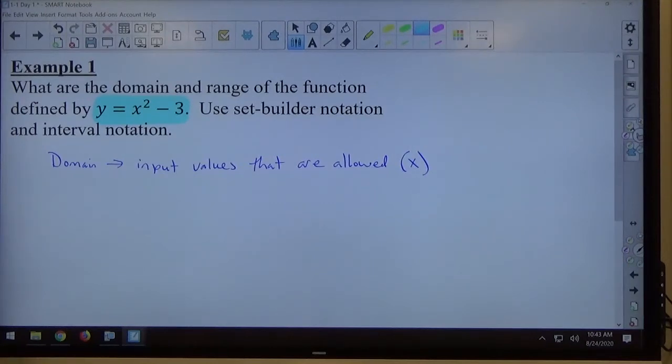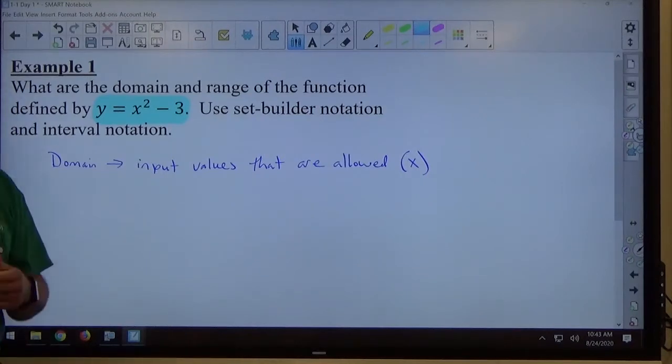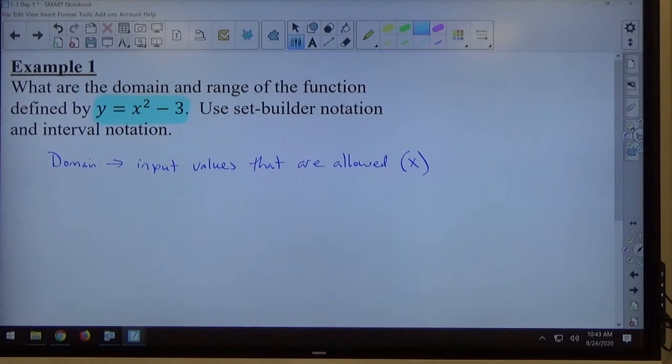Squaring numbers is allowed for all types of numbers, right? Can we square fractions? One-half times one-half is one-fourth. Yeah, that's possible. Square decimals, 0.2 times 0.2 is 0.04. So I can square anything. What type of numbers can be subtracted by three? Positive numbers, negative numbers, zero. Zero minus three is negative three. Fractions, decimals. I can square anything. I can subtract anything. So I'm in a situation here where I'm allowed to do anything I want to with any numbers I want to.